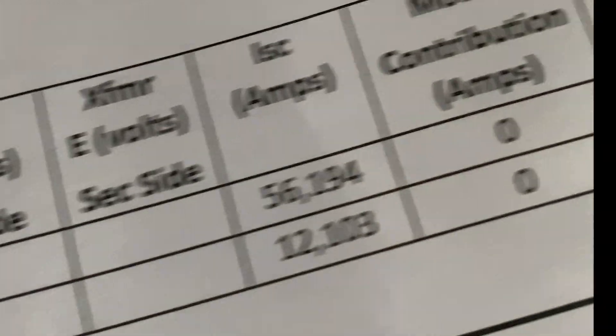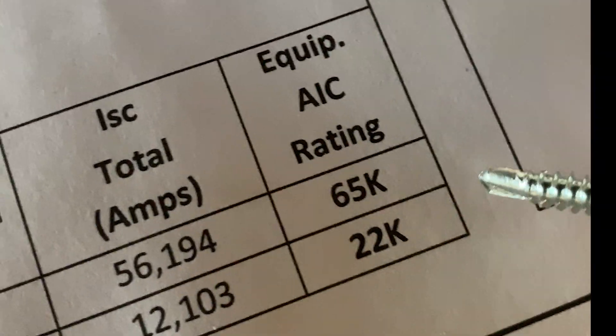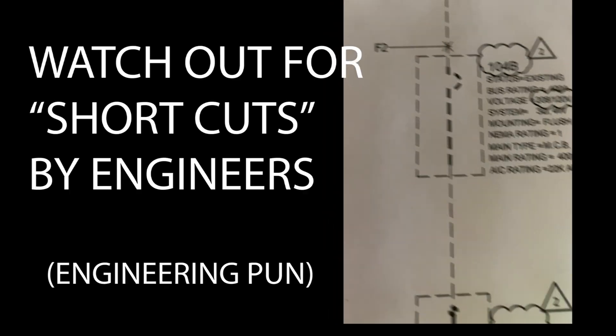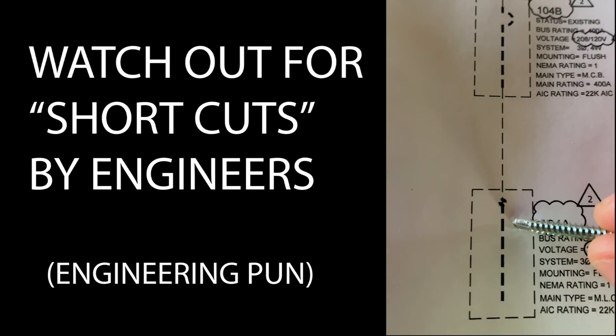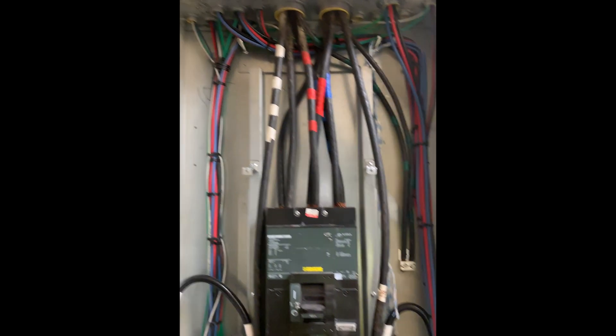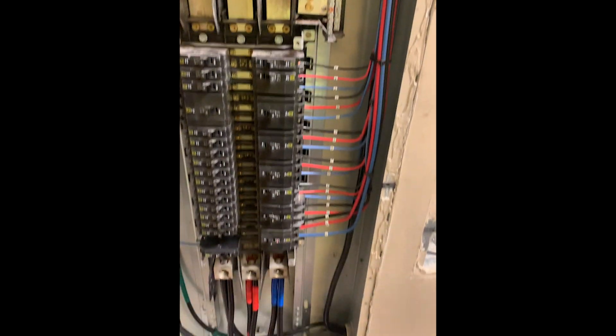Luckily a properly engineered project with a new panel board will have the information available often right on the plans somewhere. Sometimes where there's an existing system and a panel board is just added downstream of some existing equipment, the engineer can get away with a note or a specification that says the new panel's short circuit current rating is to be the same as the panel upstream that's feeding it. The idea here is that if that rating is strong enough for the panel upstream, it's definitely strong enough for the panel downstream because that current will definitely reduce on its way downstream.